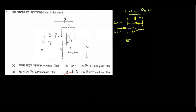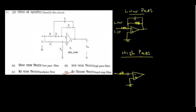Similarly, the high pass active filter — these are active filters because we are using active elements. In a high pass filter, it is also similar to inverting amplifier configuration. In the input resistor path there will be a capacitor, and the feedback path remains the same. So the answer is option D, band stop filter.